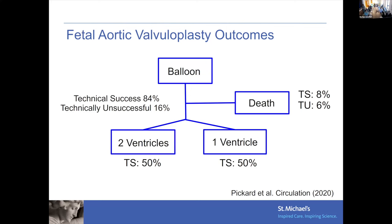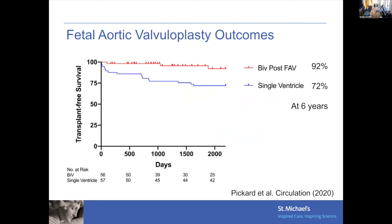When it's technically unsuccessful, a small percentage will have demise, very few will develop a two-ventricle circulation, and the majority will have single-ventricle palliation. So even if technically unsuccessful, a few can still achieve a two-ventricle circulation. This is truly a high-risk, high-reward situation with a large degree of uncertainty. At six years, of those who underwent successful balloon dilation in the fetal stage, 92 percent will have transplant-free survival, versus closer to 72 percent with single-ventricle palliation.